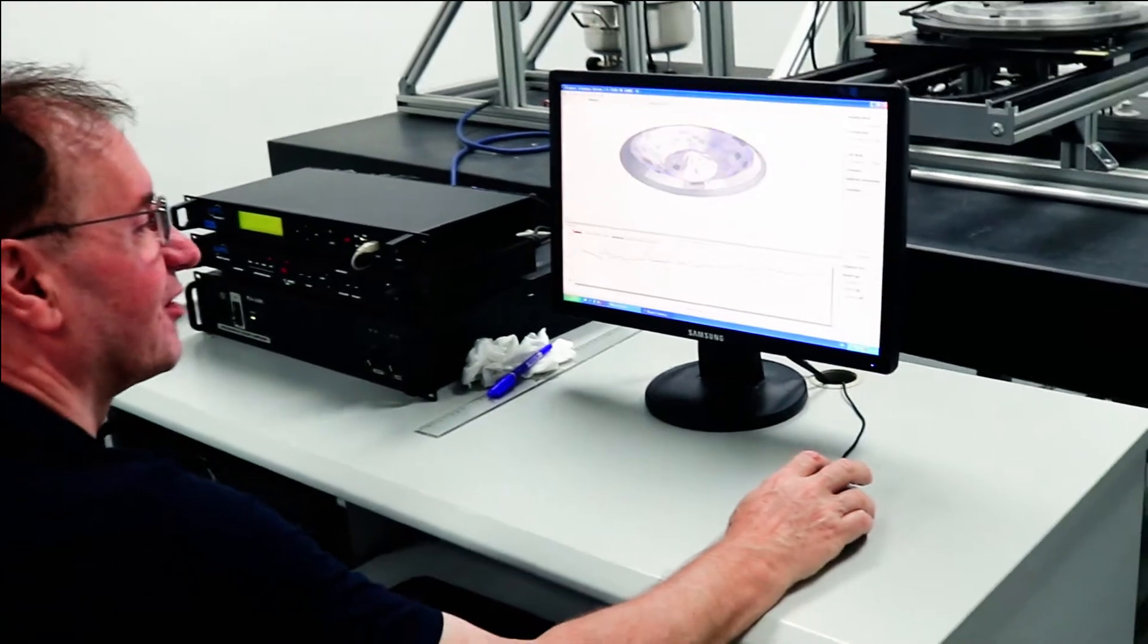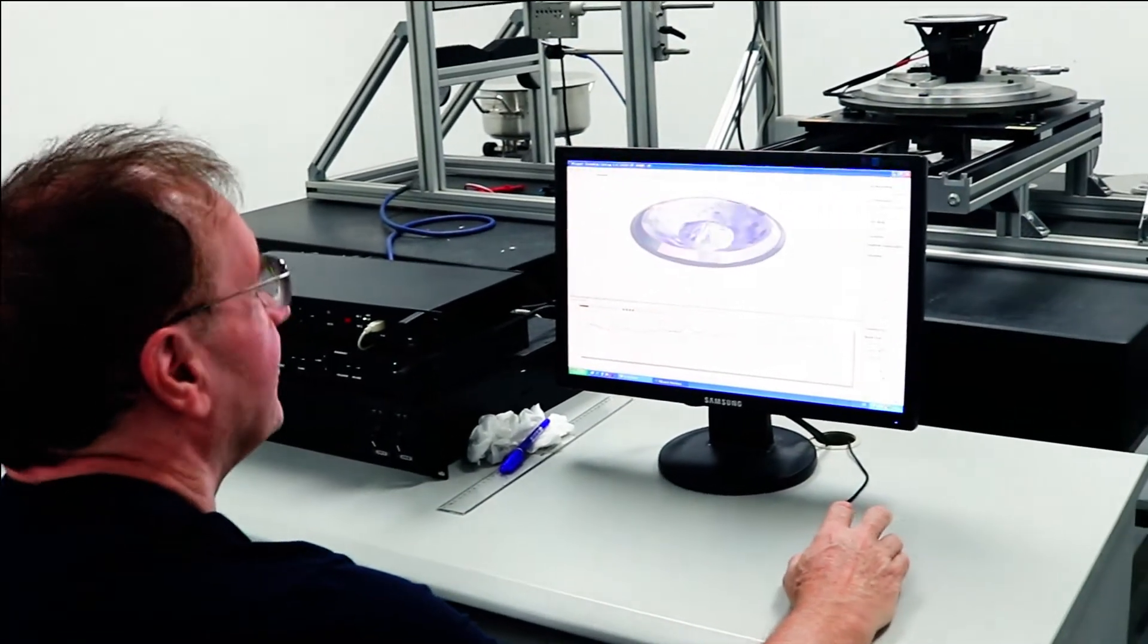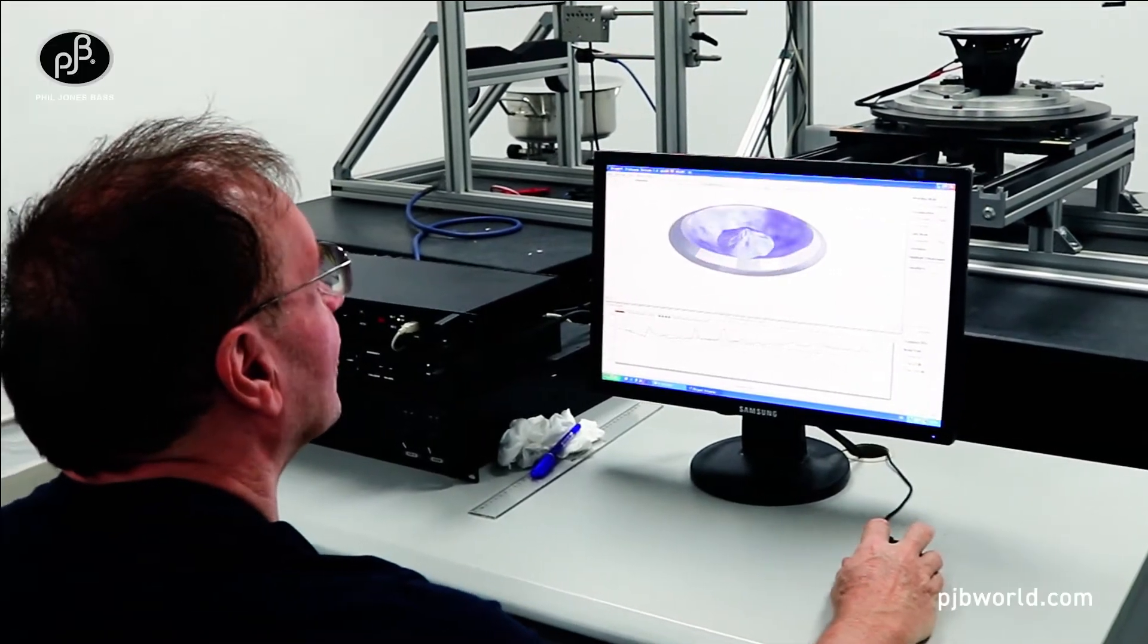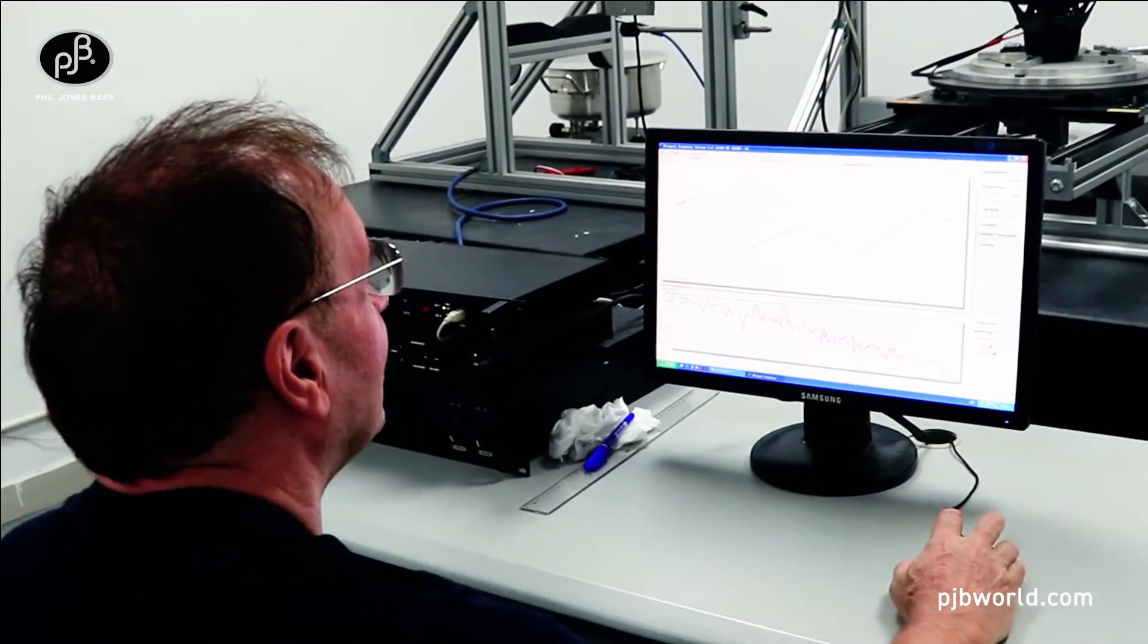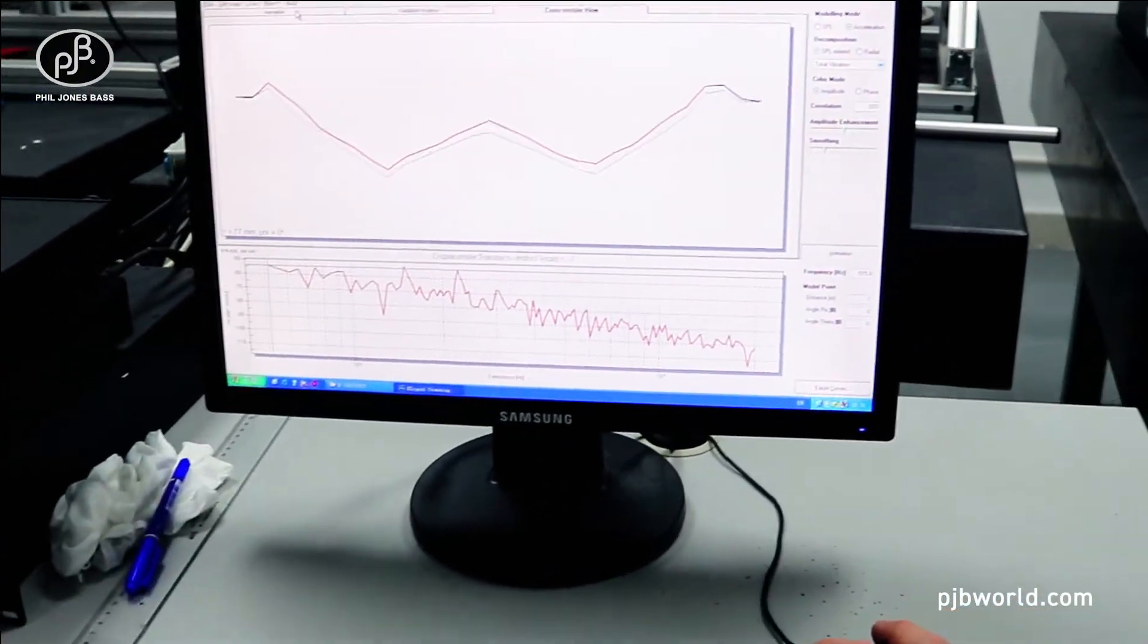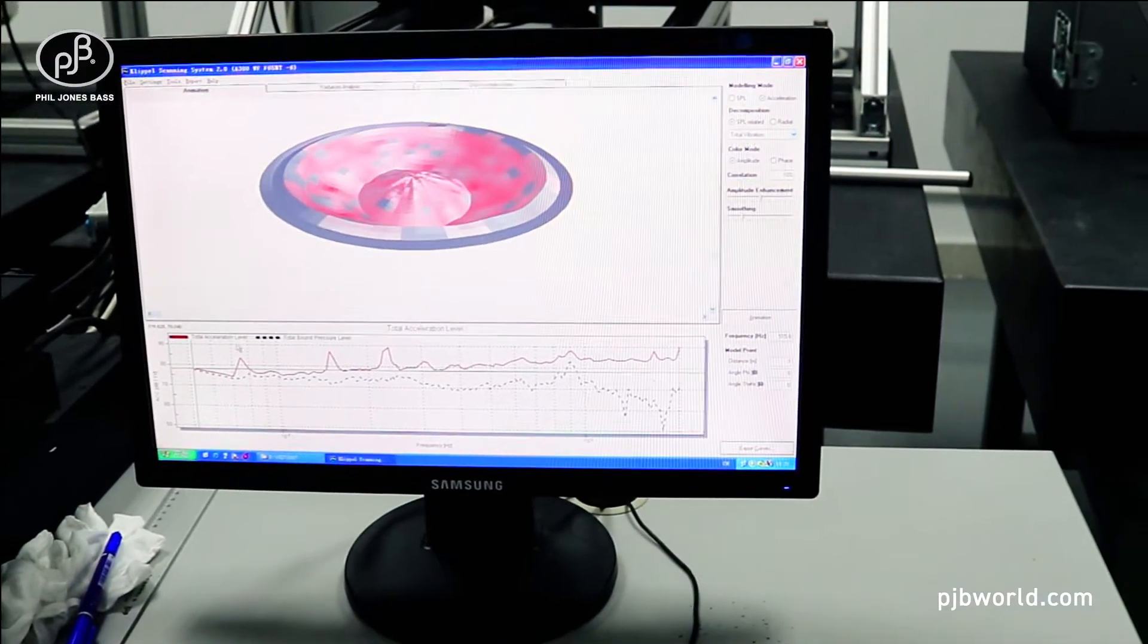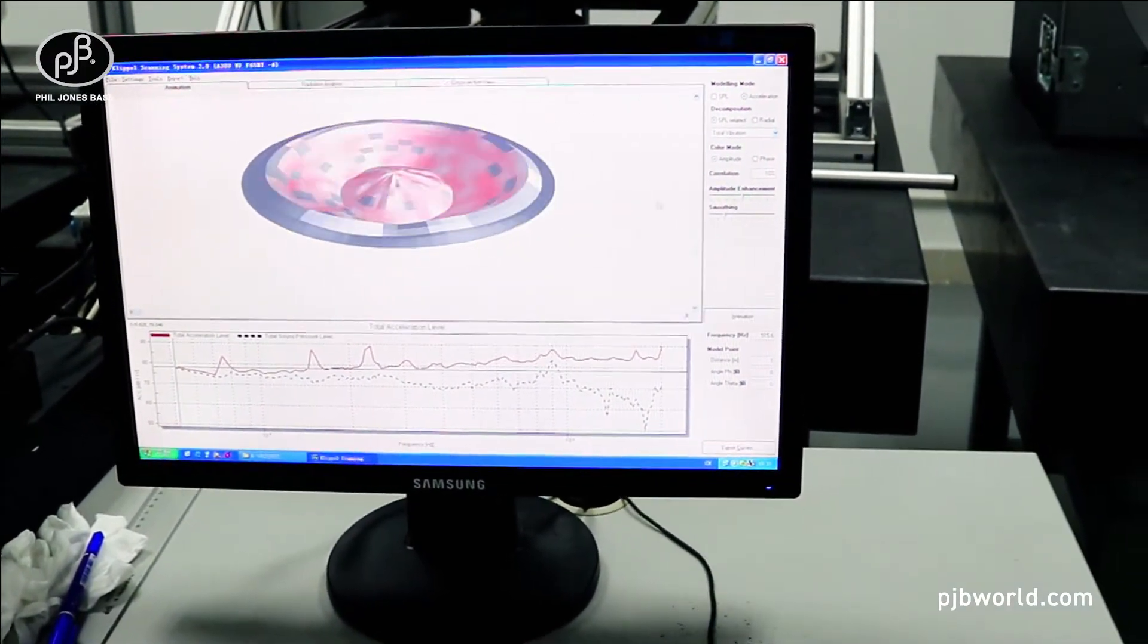This is a frequency of 515.6 Hz and this is a 3D animation of the cone. We can look at the cross-sectional view to see the dust cap, the surround and the cone. That's the 3D of the cone and you can see it's working almost like a piston.